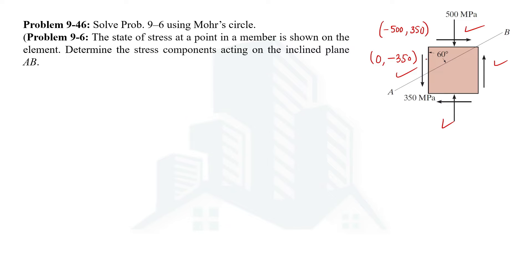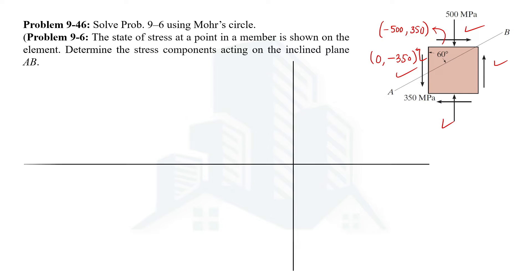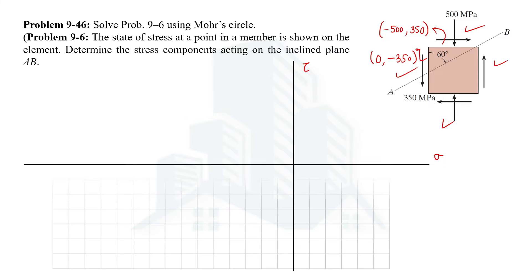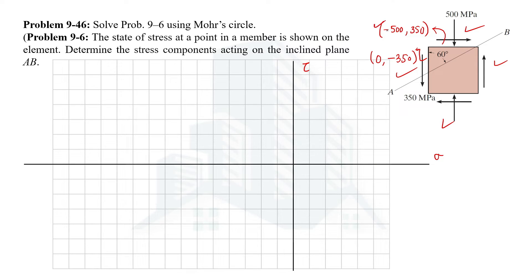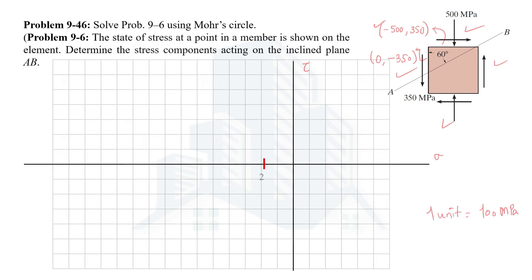Now we have the two points: one from the state of stress at the first face, and another from the state of stress at the second face. Let's set up the normal and shear stress coordinate system — vertical is shear, horizontal is normal. With a scale of one grid unit equal to 100 MPa, let's plot the first point at minus 500 and positive 350. Minus 500 means five units to the left, and 350 positive means 3.5 units upward.